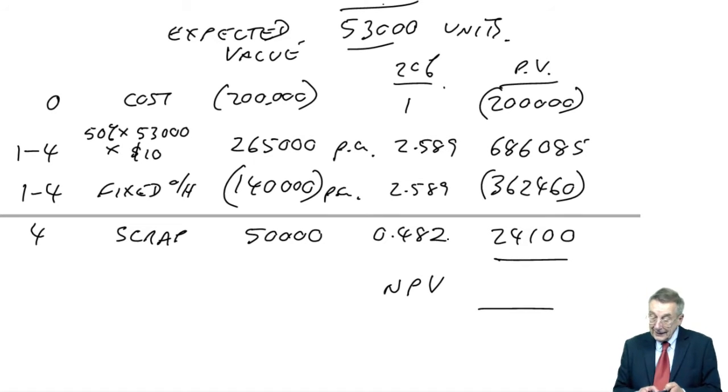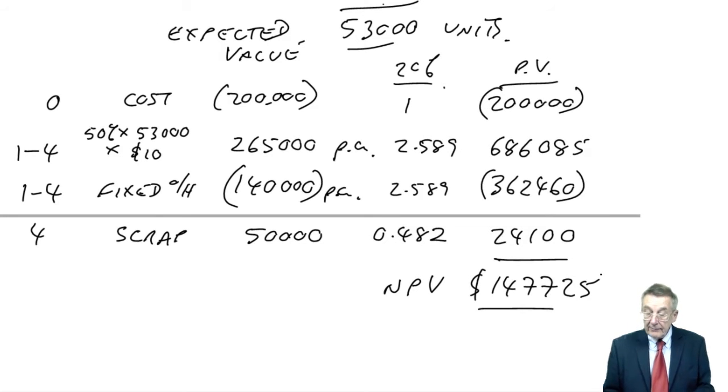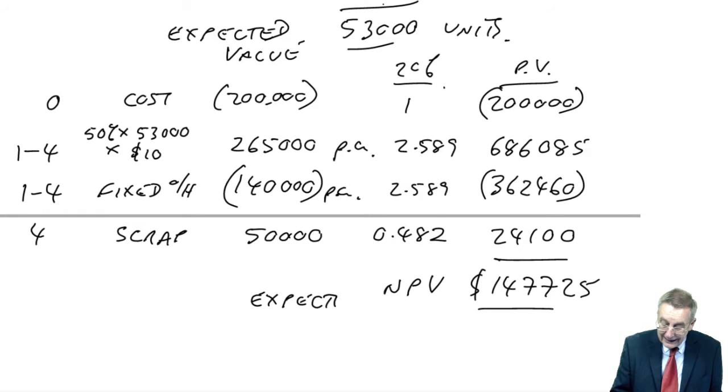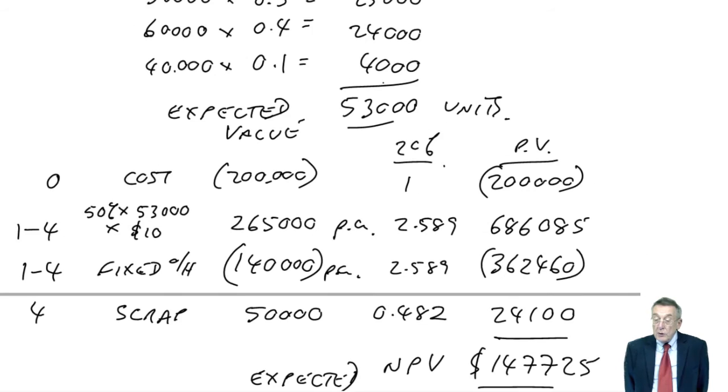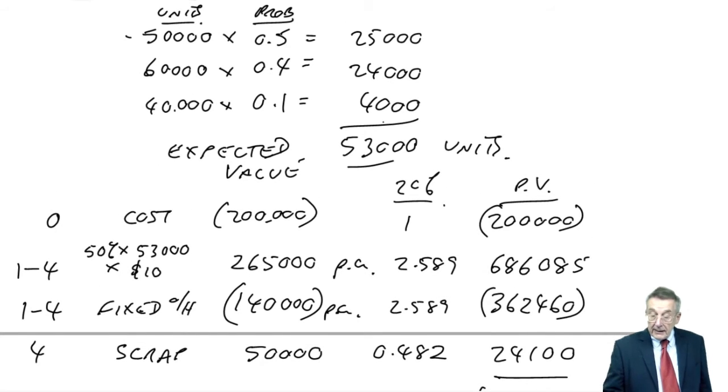The NPV, I think it's right, £147,725. I say the NPV, it's the expected NPV. The problem being, and a huge problem, the actual NPV will not be that at all, because the demand won't be 53,000.